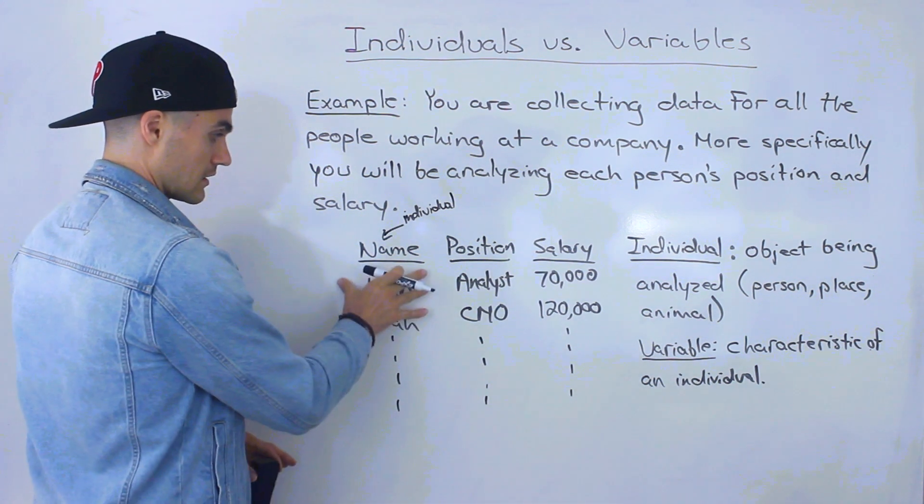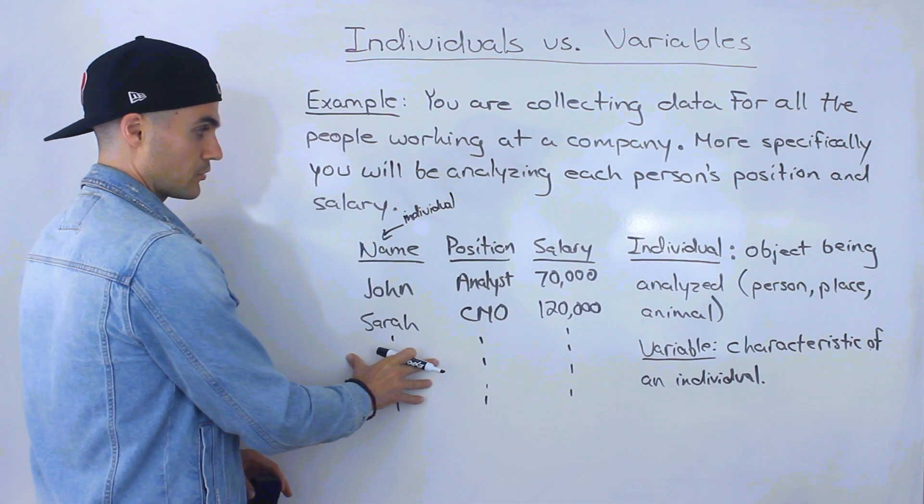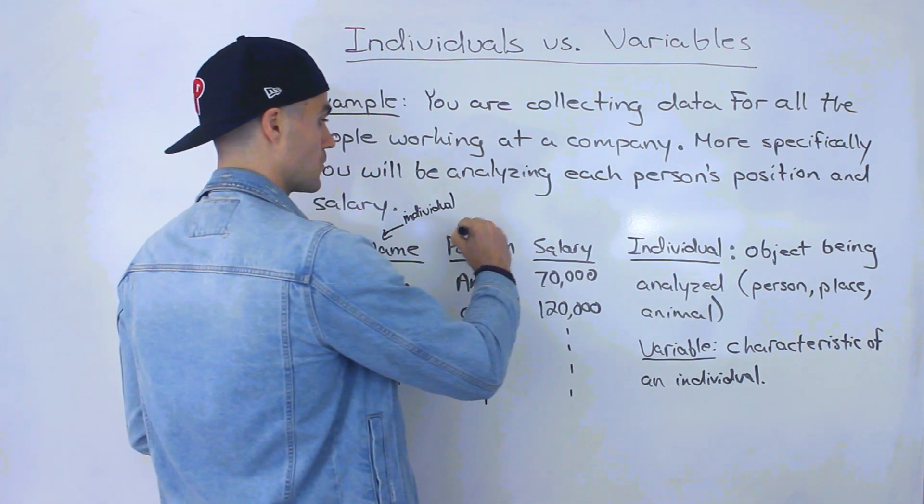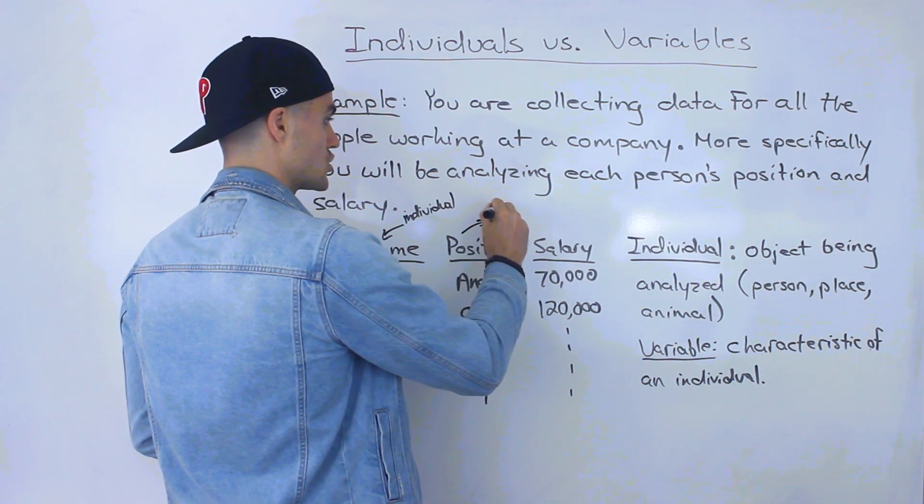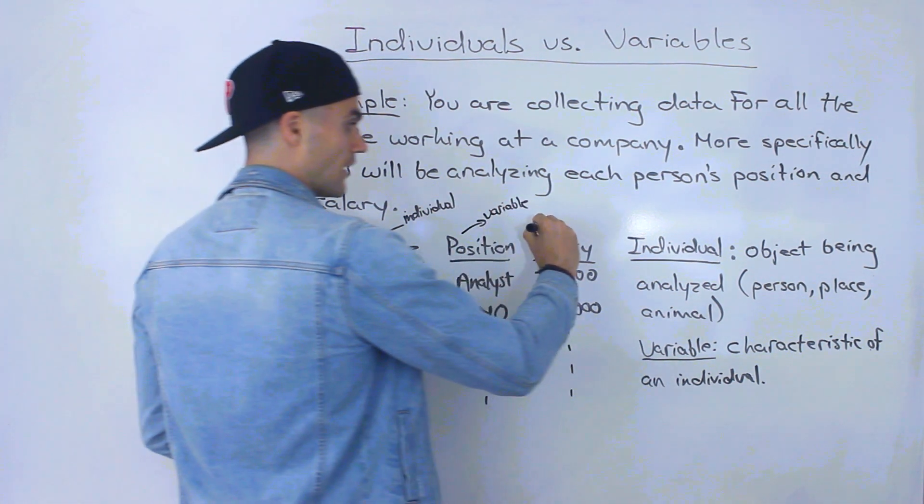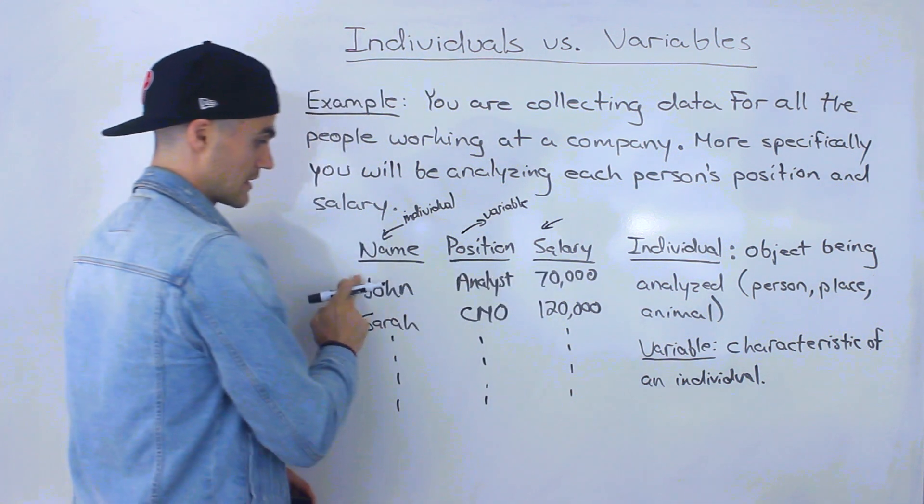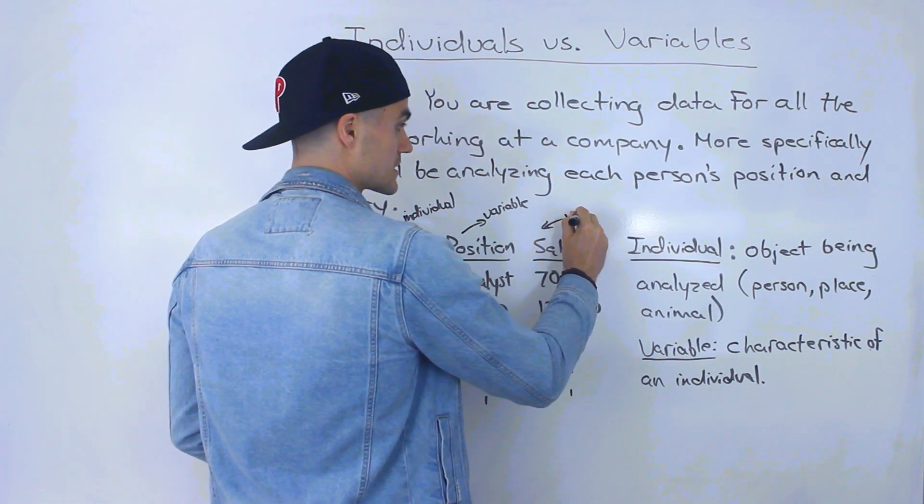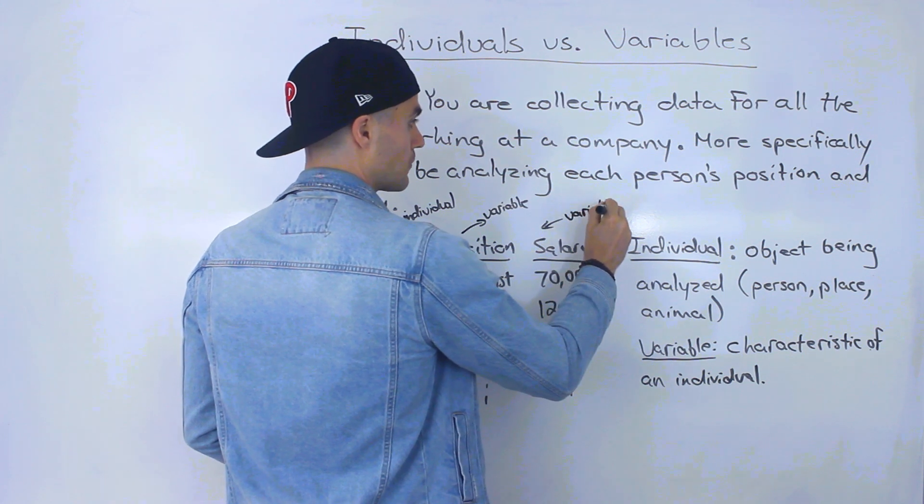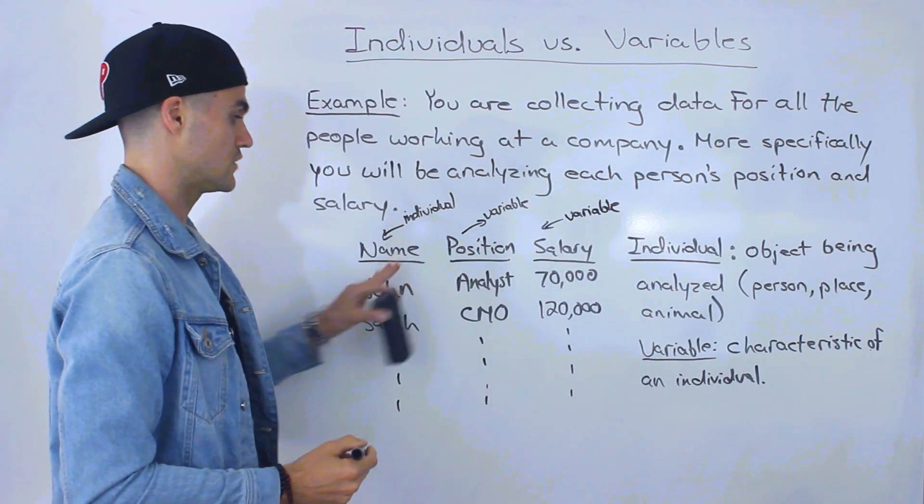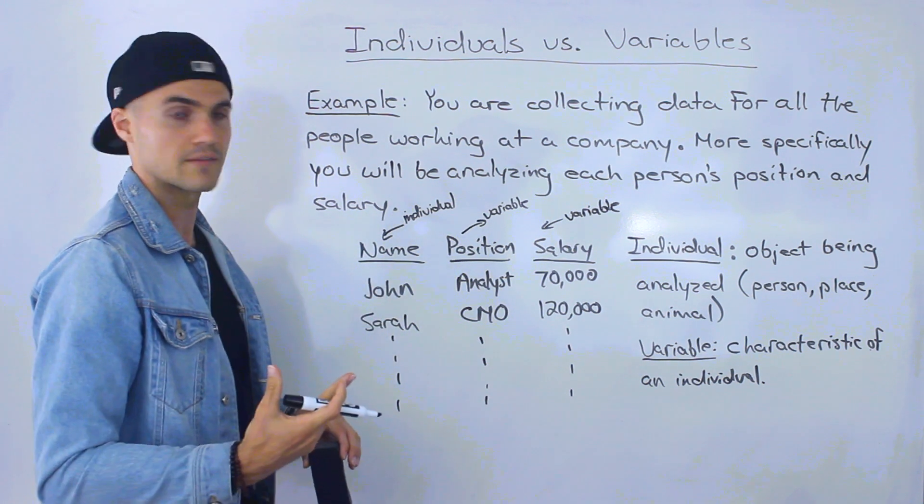And then the variable, the characteristic of these employees, notice that there's two characteristics here that we're dealing with. So we have this position, which is a characteristic, so that's a variable. And then also what salary that individual or that employee is making, that's a characteristic as well. So notice that we have two variables, the position, the salary, and then the individual is each employee that's being analyzed.